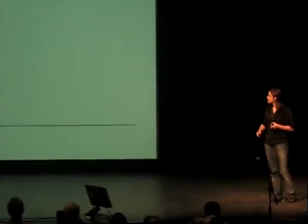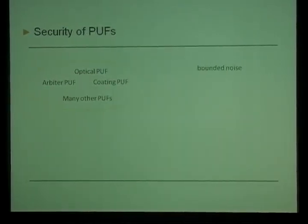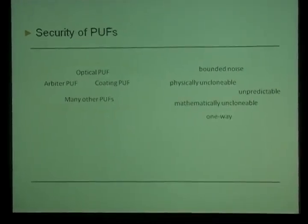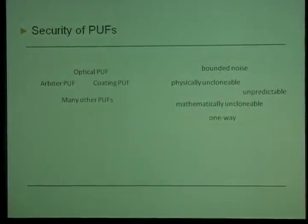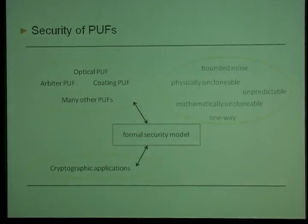Physically Unclonable Functions are hardware tokens which receive an input — a challenge or stimulus — and produce a fuzzy output. There are many implementations for PUFs, and they satisfy different security properties, so not all of them satisfy the same ones. Security properties are somewhat informal, so if you want to use PUFs for cryptographic applications, you would like to have a formal security model so that you can construct provably secure schemes.